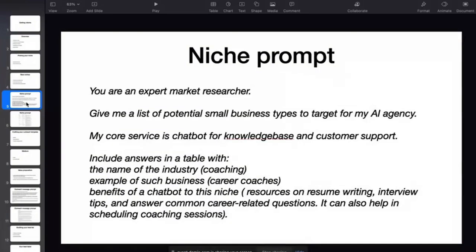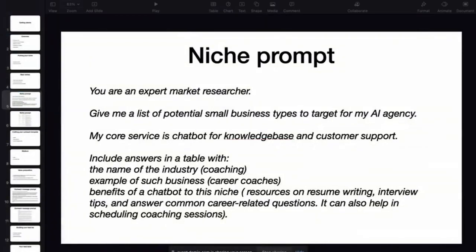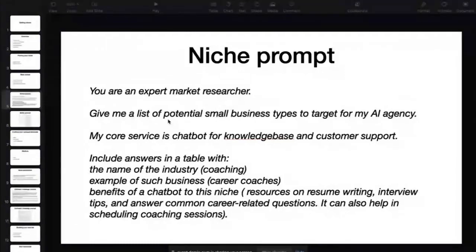This is what we call our niche prompt. We plug this prompt into ChatGPT to basically ask it to help us find the niche. Before, the general strategy around finding niches was to look at your affinities and interests first, then go to Google or do some niche research. But nowadays with ChatGPT, it can do the niche research for you — that's why we use a niche prompt.